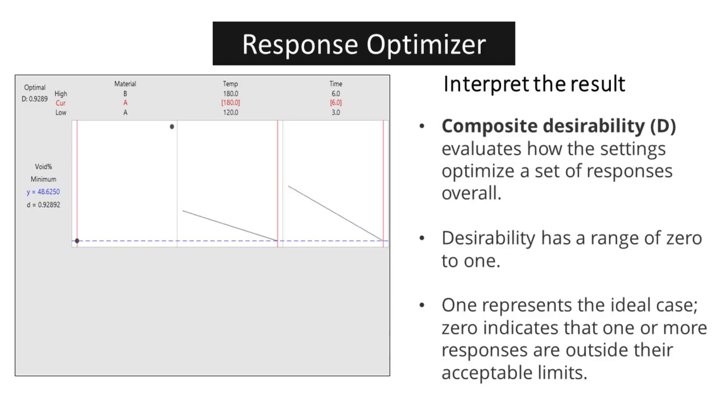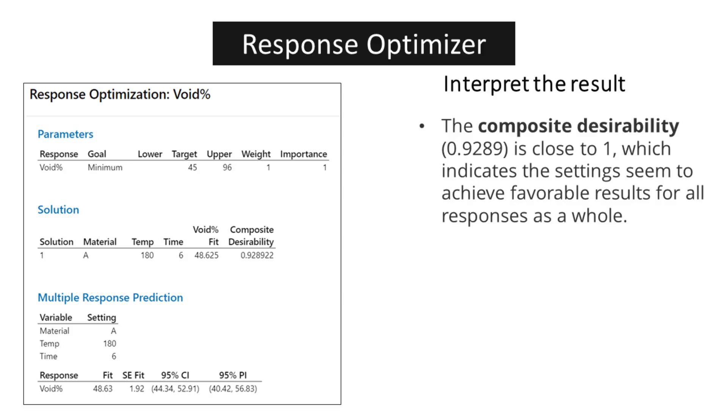Composite desirability, D, is a powerful tool for evaluating the overall effectiveness of a set of response optimizations. With a range of 0 to 1, desirability offers a clear indication of the degree to which the settings meet the desired outcome. A desirability score of 1 represents the ideal scenario, where all responses are optimized to their fullest potential. On the other hand, a score of 0 signals that one or more responses are outside their acceptable limits, highlighting areas in need of improvement. The composite desirability of 0.9289 suggests that the settings are likely to produce favorable results for response. This indicates that the chosen parameters are effective in achieving the desired outcomes as a whole.